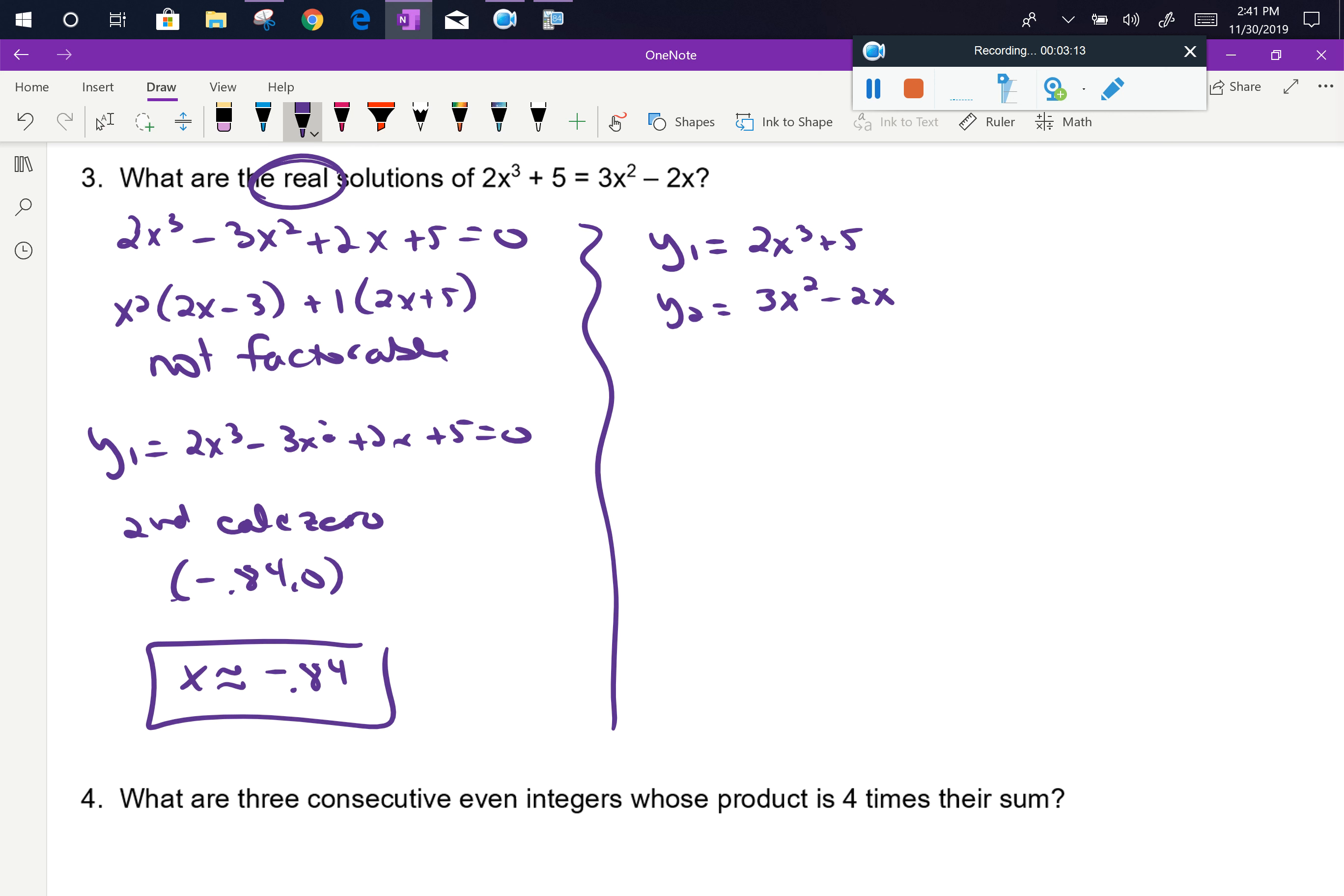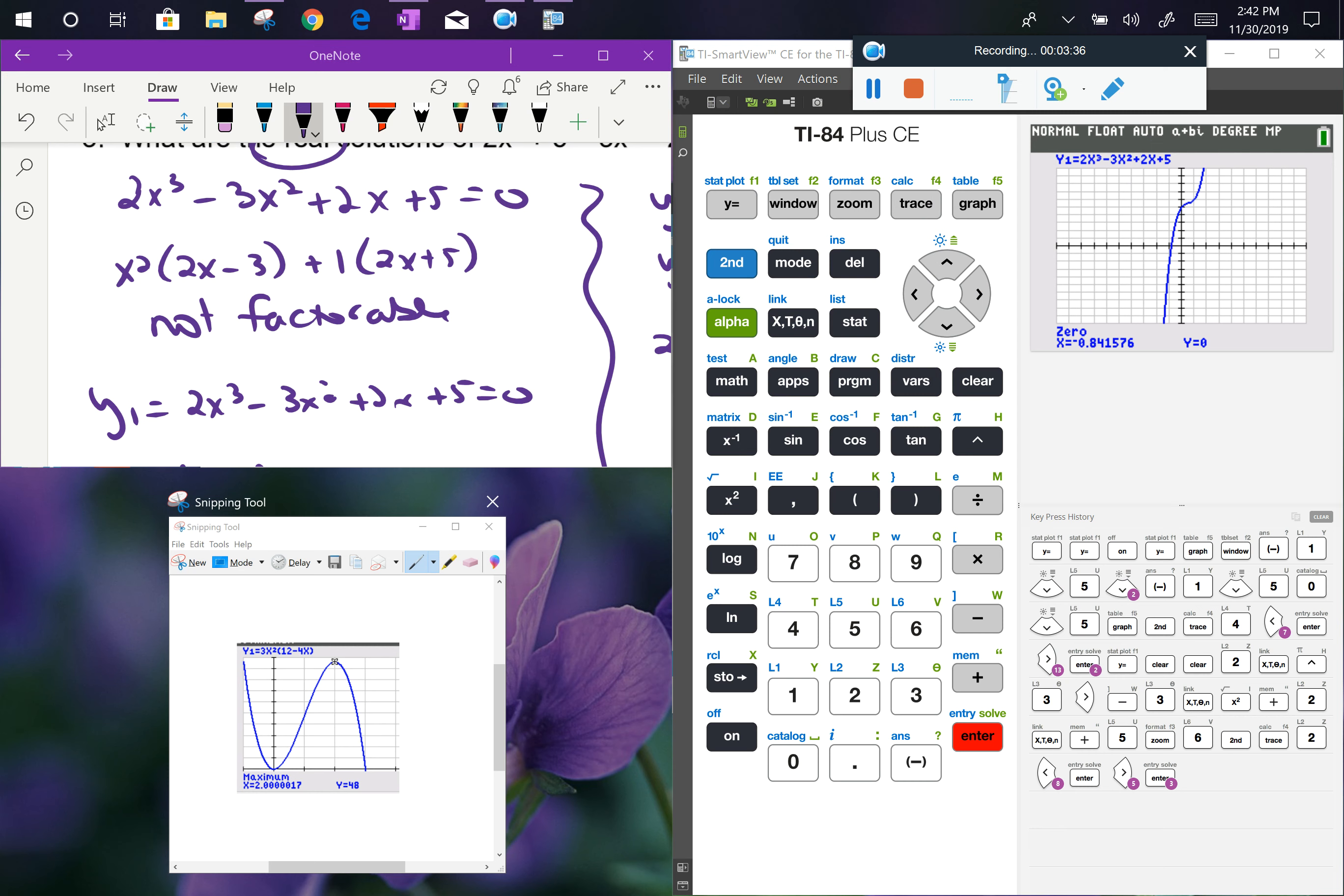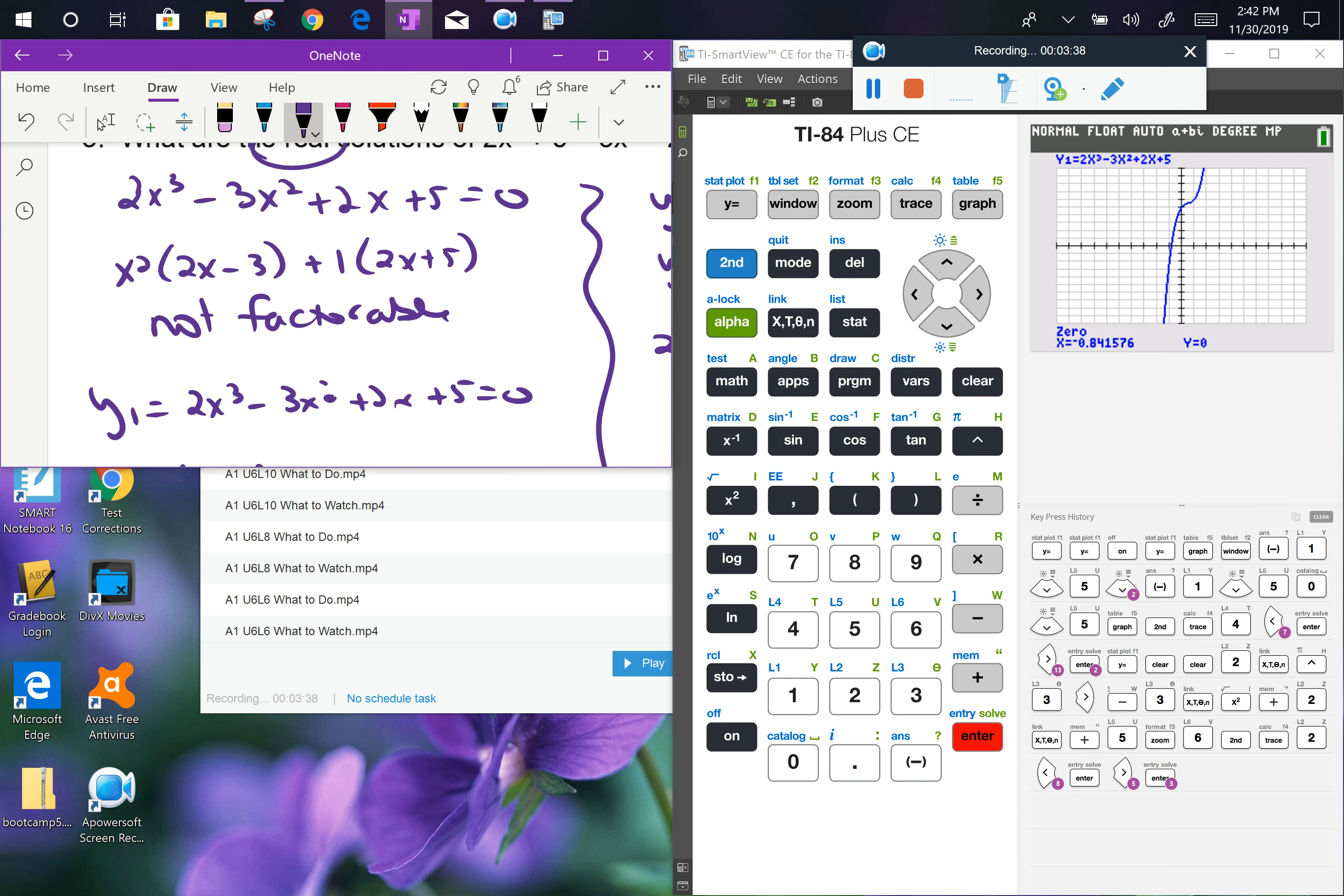When I do that, I'm not going to be looking for the zeros of the function, because I'm not actually graphing the real function. I'm graphing it as if it's a system of equations, which means I'm going to end up using second calc intersect to see where those two different functions intersect with each other. So let's just take a quick peek at that in the calculator as well, so you can see that that yields the same answer.